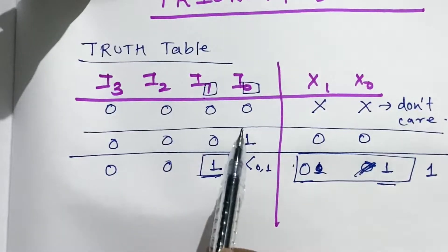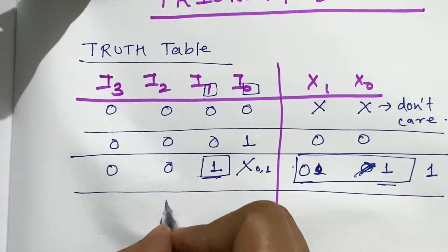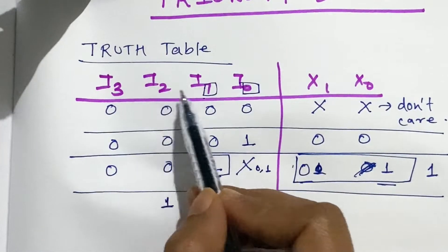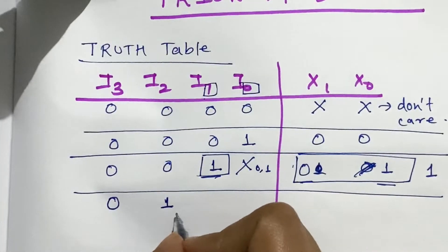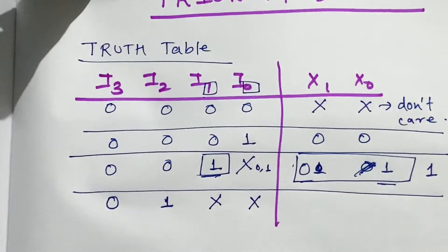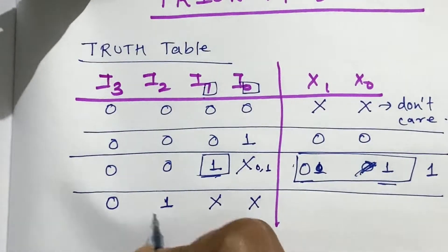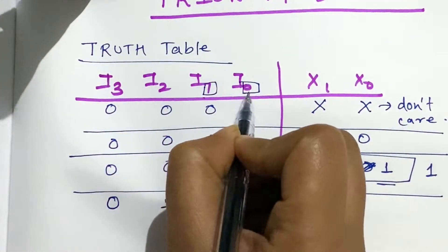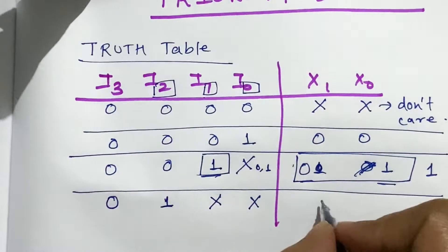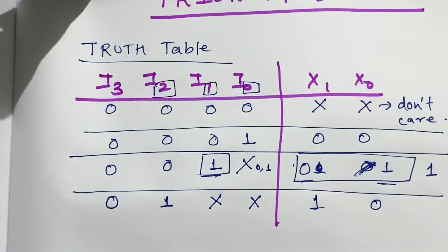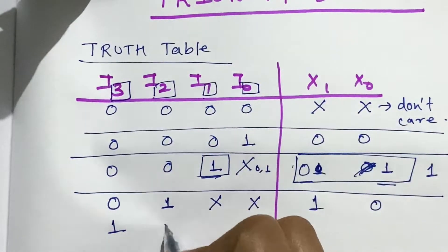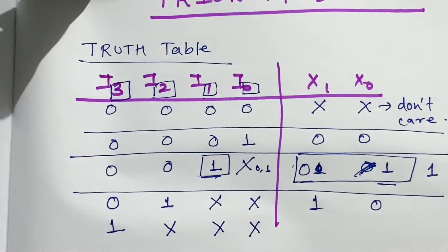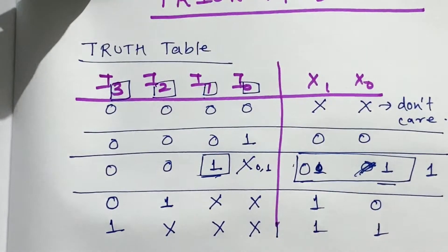Case 4: when i2 is 1, i2 is greater than i1 and i0, so we don't care about the values of i1 and i0. The output is the binary code of 2, which is 10. Case 5: when i3 is 1, since 3 is greater than 2, 1, and 0, we don't care whether i2, i1, and i0 are 0 or 1. The output will always be 11, which is binary for 3.